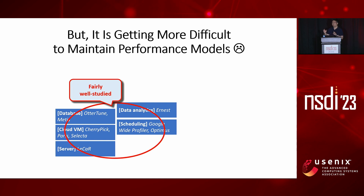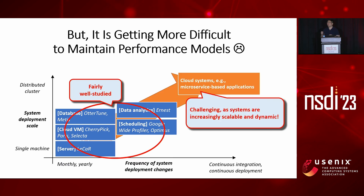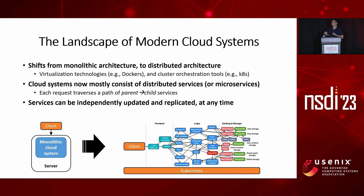But it's getting more and more difficult to maintain these performance models, especially for cloud applications such as microservice-based applications. Microservices are very different from traditional monolithic applications. As you can see from the figure, they are composed of distributed services. A user request traverses a set of services, and collectively those services contribute to the end-to-end performance. What's even more important is that these services are loosely coupled — they can be independently upgraded, replaced, and scaled — which is why cloud applications are increasingly scalable and also increasingly dynamic.